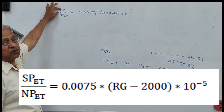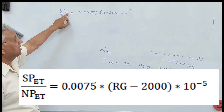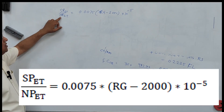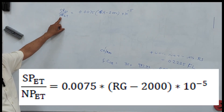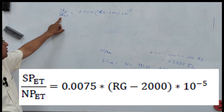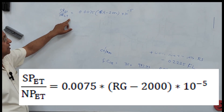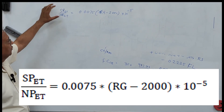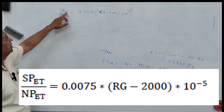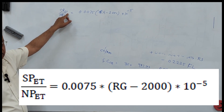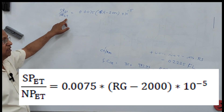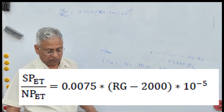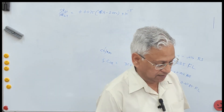SP is the cost of spare parts. ET stands for exclusive of taxes, and NP is the new price of the vehicle exclusive of taxes. A similar equation applies for SP_IT and NP_IT, which are inclusive of taxes. The form of the equation remains the same, and the parameters remain the same.